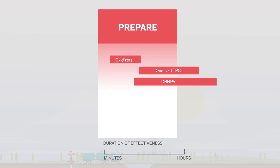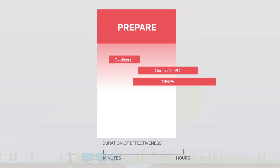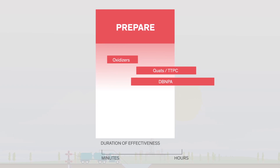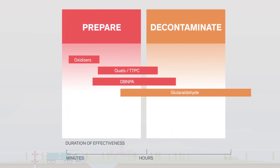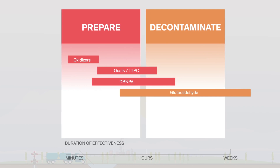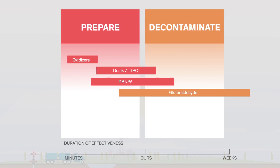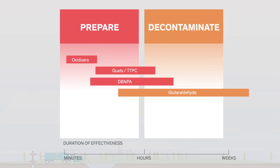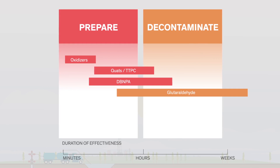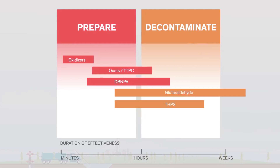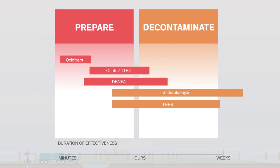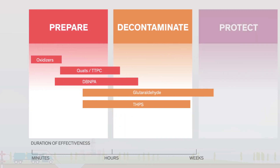DBNPA is the fastest-acting non-oxidizing biocide. It is more selective than chlorine dioxide, making it more chemically available for microbial control. Glutaraldehyde is one of the most versatile and proven biocides on the market and is readily biodegradable. While it's not as fast-acting as DBNPA, it is extremely effective at both preparing the water and decontaminating the well. Similarly, THPS is highly effective in the well, but has compatibility issues with other fluid additives and the formation.